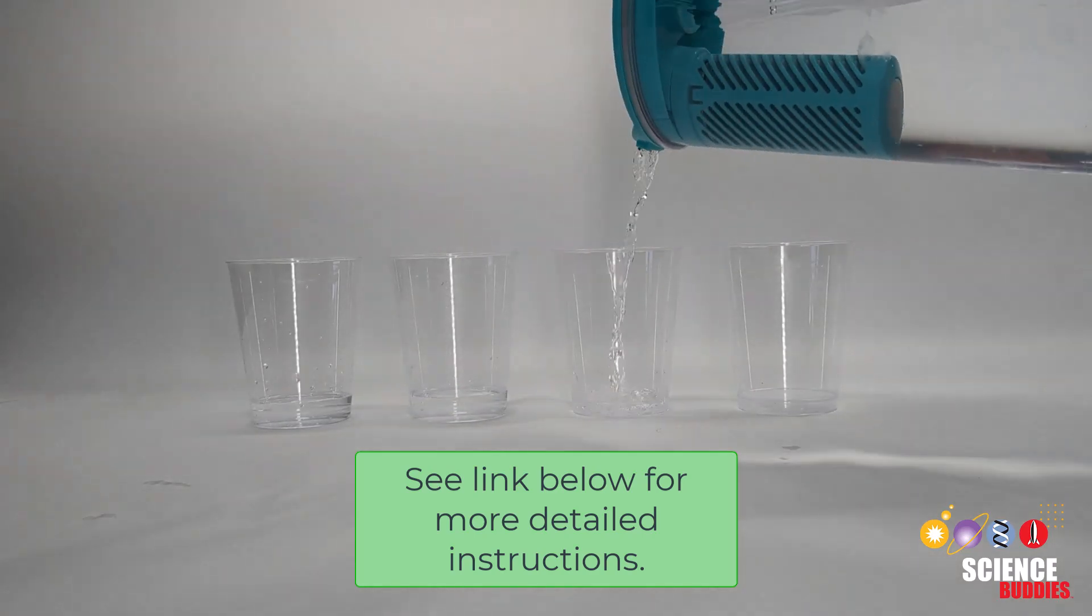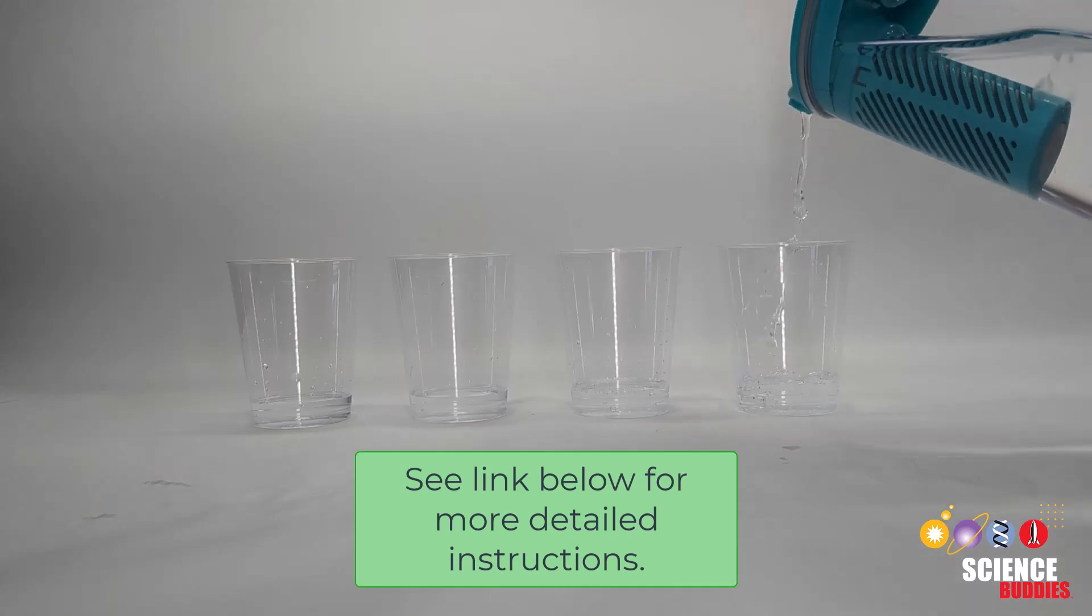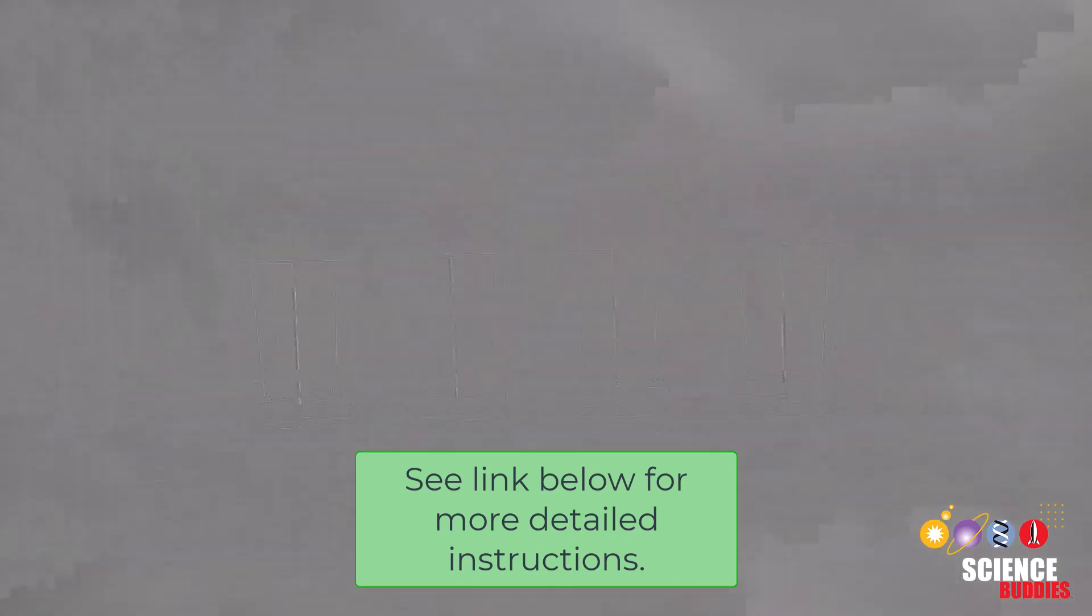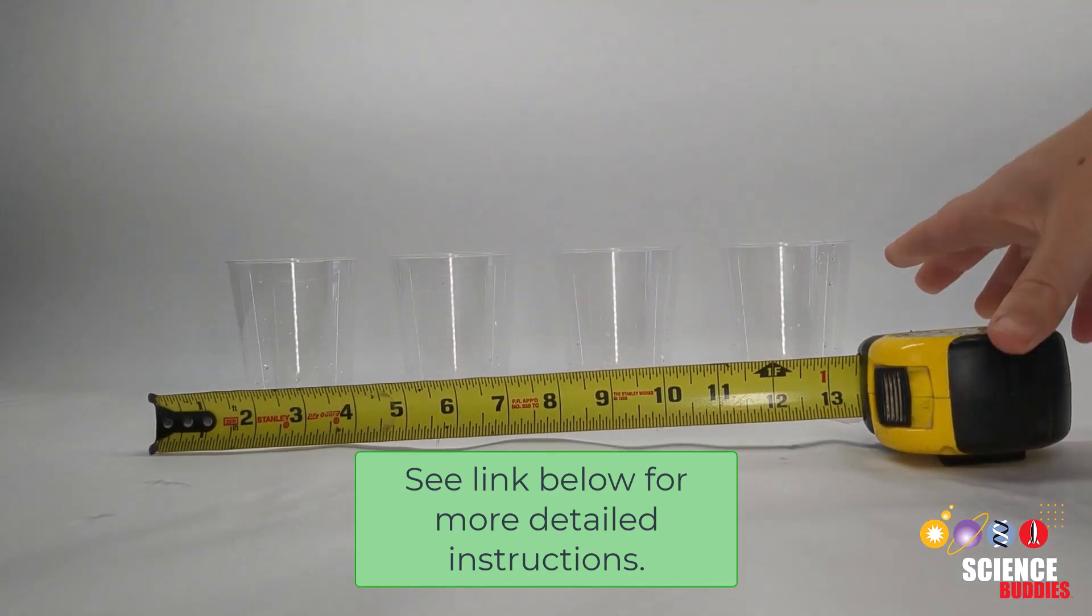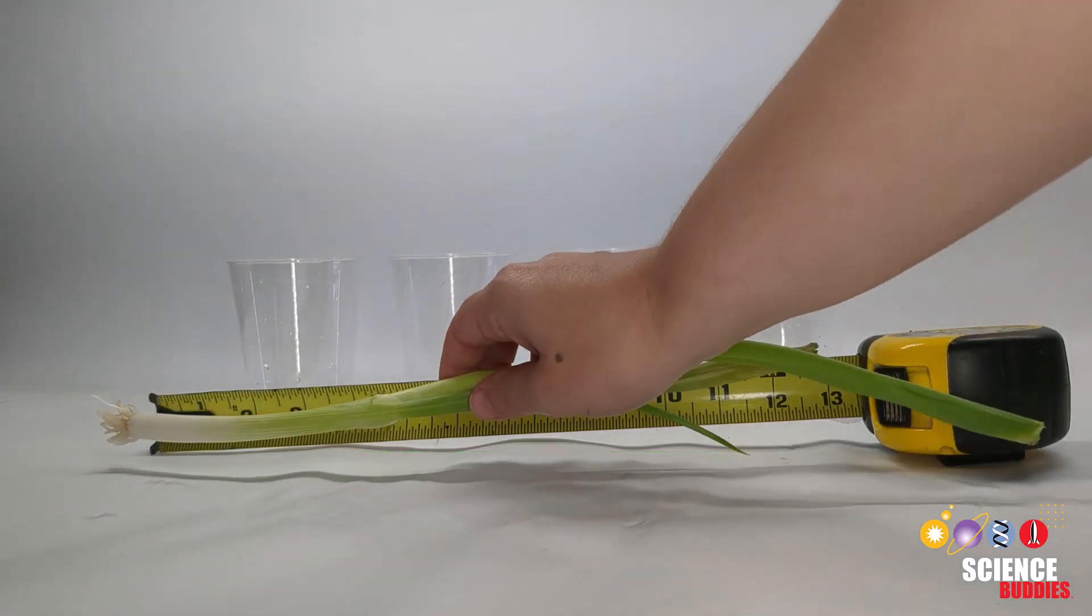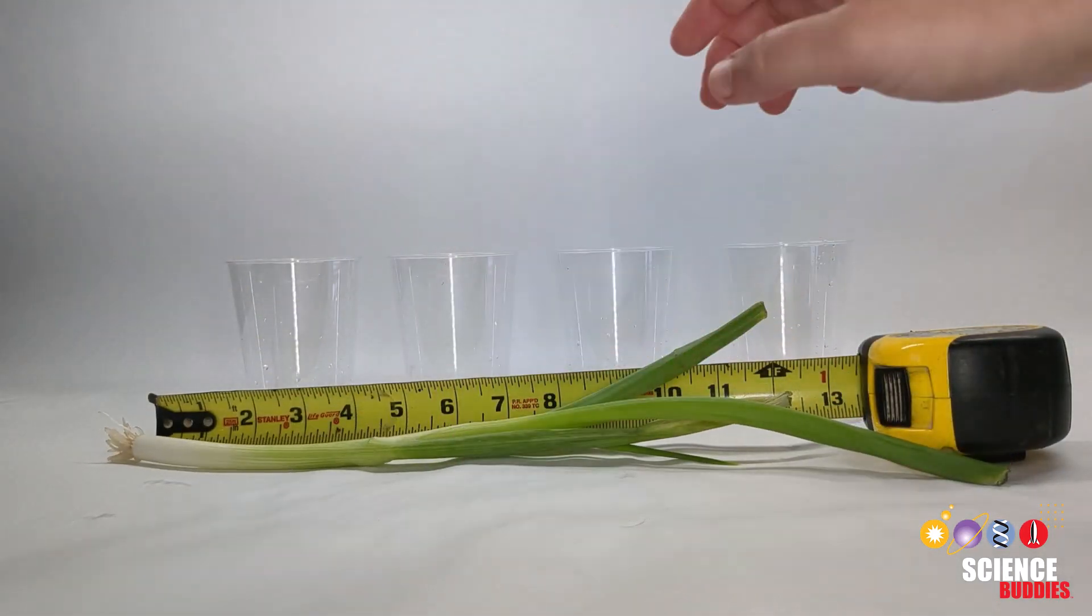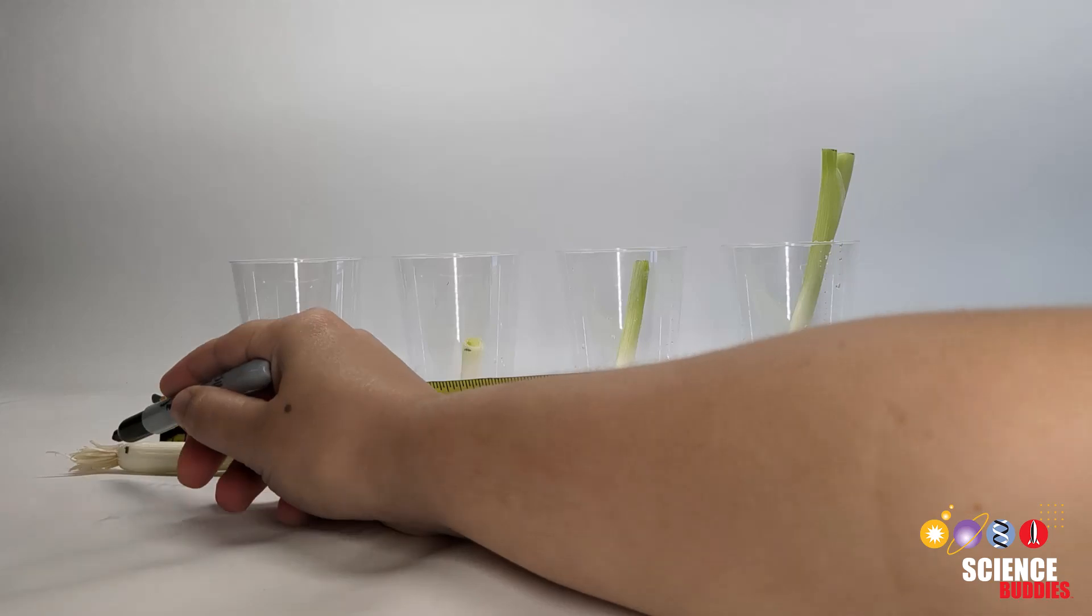Fill each cup with water. Next, pick out four similar-looking plants of the same type to determine which part of the plant has the highest and lowest ability to regenerate. Cut each shoot at a different distance from the roots of the plant to test your hypothesis.